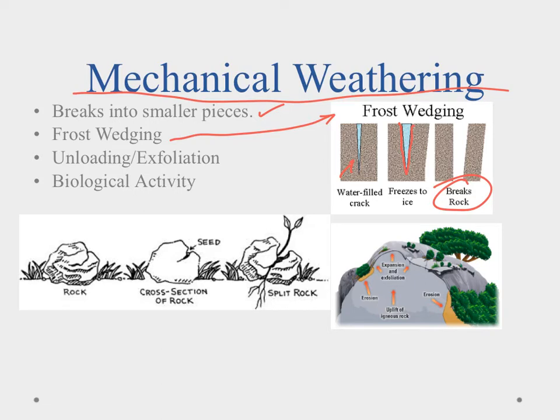The next is unloading and exfoliation. We have igneous rock that was buried and gets thrust up above the surface, exposed to the elements — this is where weathering can start to happen. It will expand a little bit as it's being uplifted, and you end up with these layers breaking off, kind of like peeling an onion. That's why we call it exfoliation — you're peeling off these layers.